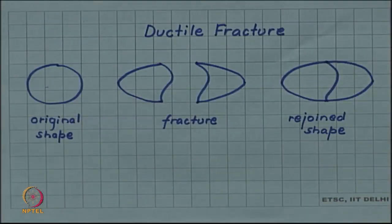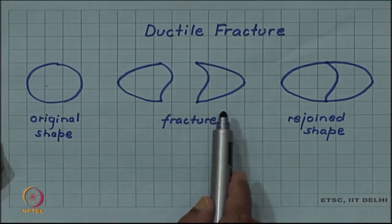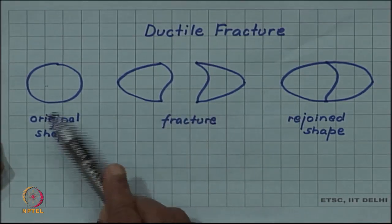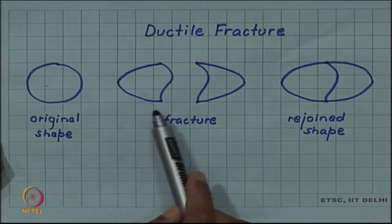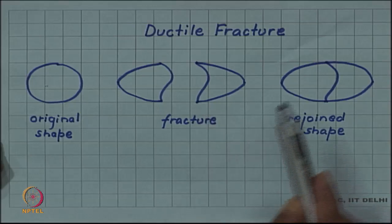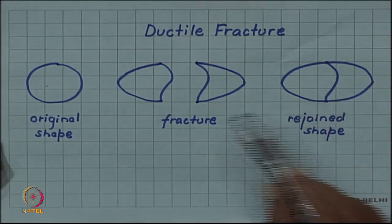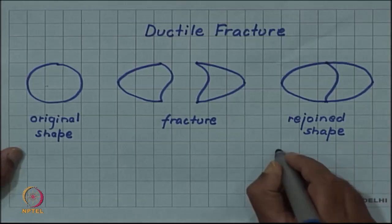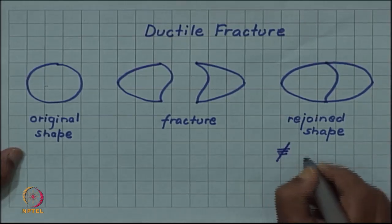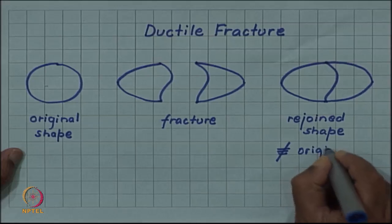In ductile fracture there is significant plastic deformation before fracture happens. The original shape deforms plastically before it cracks. So in this case, if we rejoin the cracked pieces we will not recover the original shape — it is not the same as the original shape.